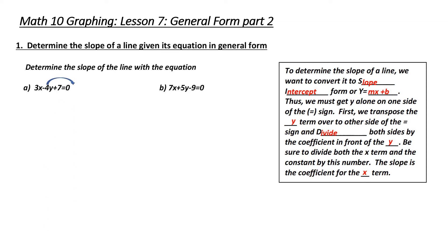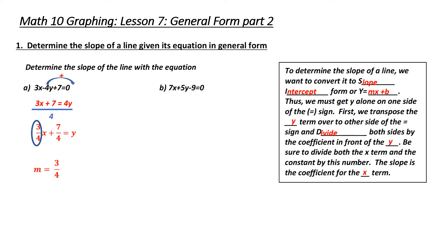How do I get rid of negative 4y from the left-hand side? I add it to both sides. I now need to get rid of the 4. The 4 is being multiplied by y, so to get rid of it, I'm going to divide both sides by 4, giving me 3 over 4x plus 7 over 4 equals y. I now know the slope of this line is the number in front of the x, or 3 over 4. And that would be my answer.